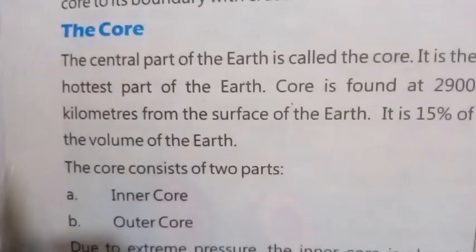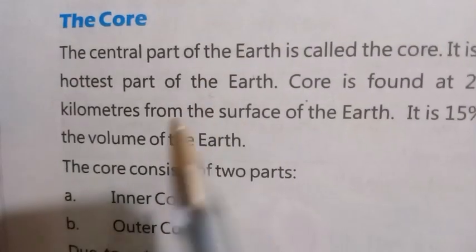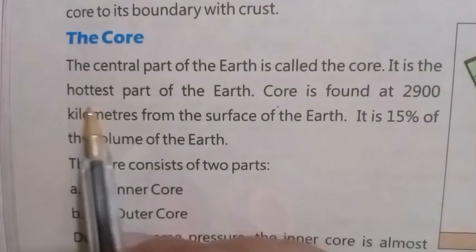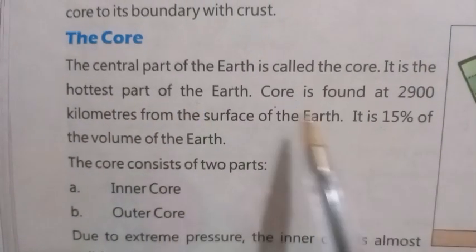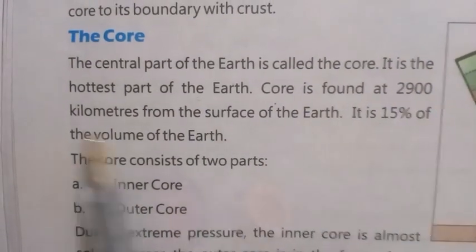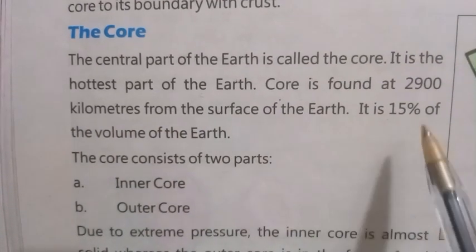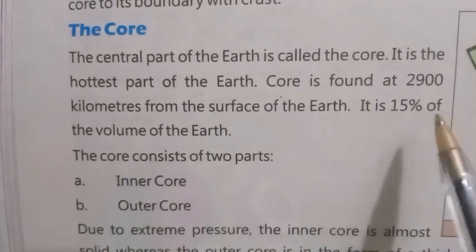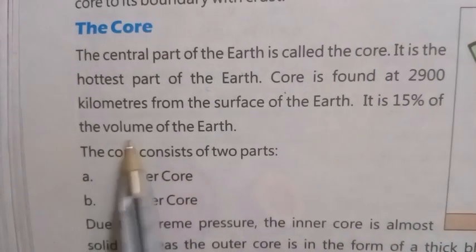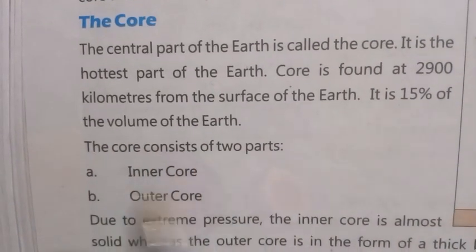The core: the central part of the earth is called the core. It is the hottest part of the earth. The core is found at 2,900 kilometers from the surface of the earth. It is 15 percent of the volume of the earth. The core consists of two parts.